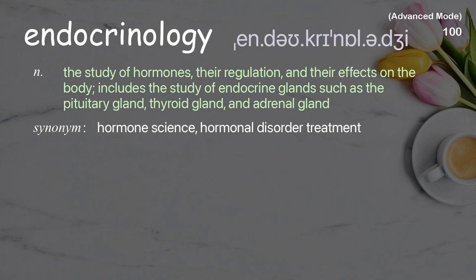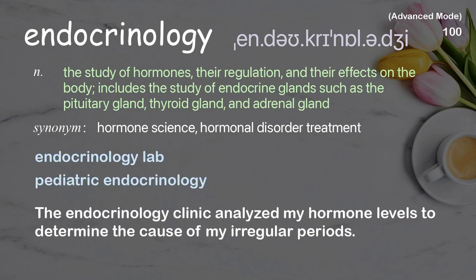Endocrinology: the study of hormones, their regulation, and their effects on the body; includes the study of endocrine glands such as the pituitary gland, thyroid gland, and adrenal gland. Examples: endocrine, pediatric endocrinology. The endocrinology clinic analyzed my hormone levels to determine the cause of my irregular periods.